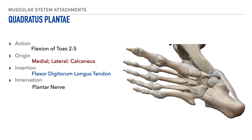Next is the quadratus plantae. Its action includes flexion of the toes, specifically toes 2 through 5. It originates on both the medial and lateral portions of the calcaneus. Its insertion is connected to the tendon of the flexor digitorum longus. The innervation of the quadratus plantae is the plantar nerve.